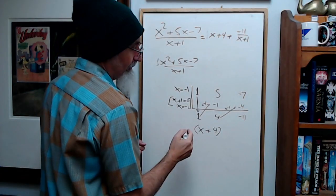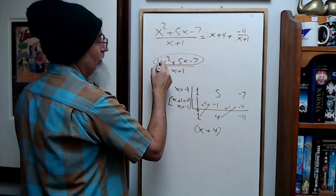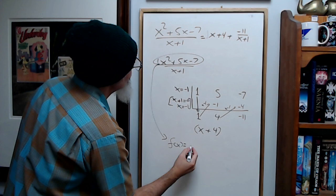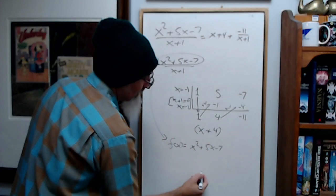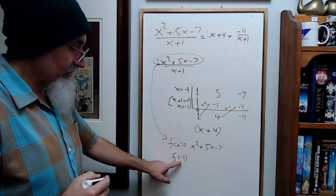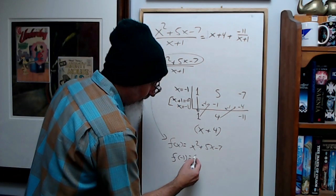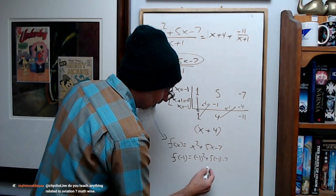This guy is your remainder, negative 11. What this really means is if you have this polynomial function f of x equals x squared plus 5x minus 7, if you find f of negative 1, basically sub in negative 1 for x, you're going to get negative 1 squared plus 5 times negative 1 minus 7.